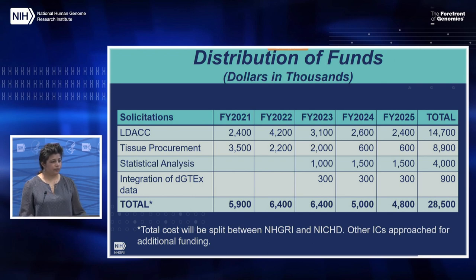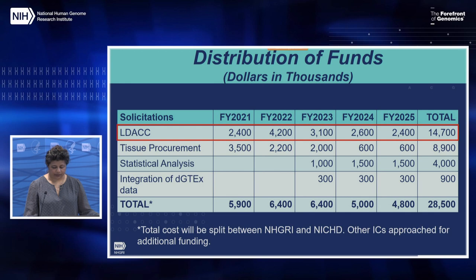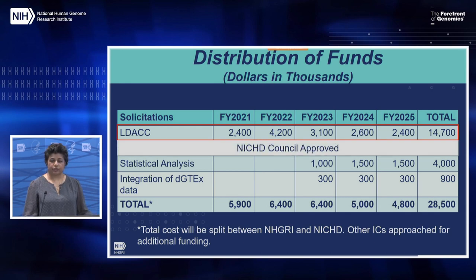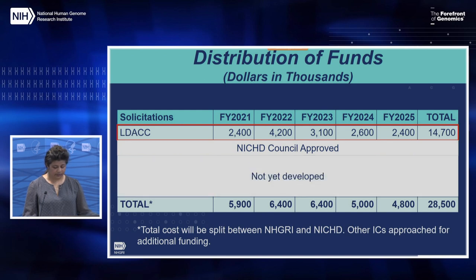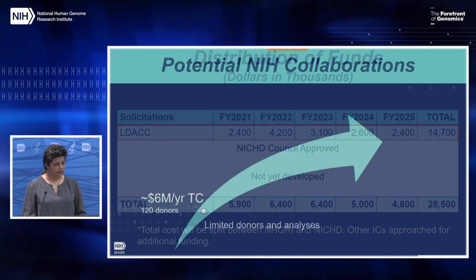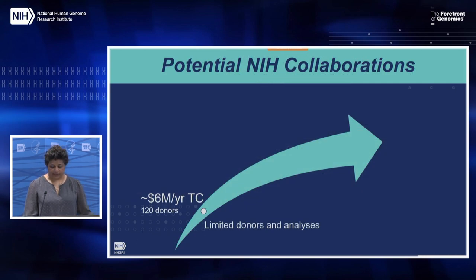This is a distribution of funds for each of the solicitations. We're asking Council to vote on the DGTEX concept, and specifically the LDAC. NICHD Council approved the Tissue Procurement Center's solicitation, and data analysis and integration of DGTEX data have not been developed yet but will be brought to a later Council. The total budget will be split between NHGRI and NICHD, with other ICs being approached for additional funding. At a minimum with two ICs, we plan to recruit 120 donors — this is a minimum, not a maximum.